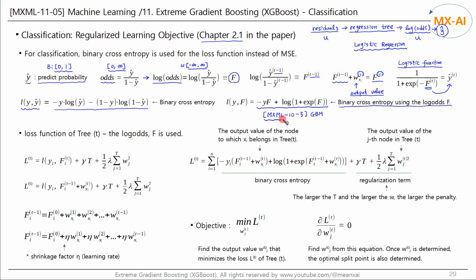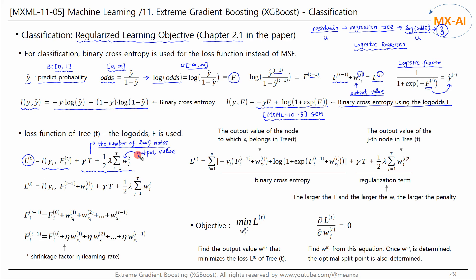We derived this formula in the GBM video. Now, as we saw in the regression video, let's define the regularized learning objective function by adding a regularization term to the loss function, where uppercase T is the number of leaf nodes and w is the output value of a leaf node. Now let's express the loss function using the binary cross-entropy. Our goal is to find w that minimizes this objective function.